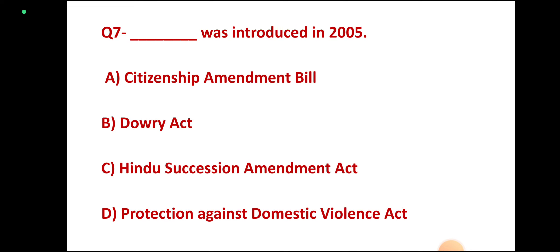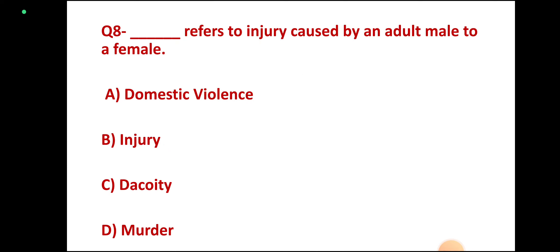Question 7: What was introduced in 2005 — Citizenship Amendment Bill, Dowry Act, Hindu Succession Amendment Act, or Protection Against Domestic Violence Act? Correct answer: Protection Against Domestic Violence Act.